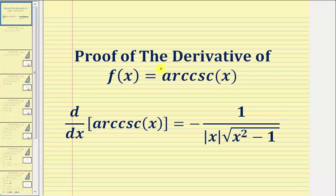Welcome to a proof of the derivative of f of x equals arc cosecant x. We'll prove the derivative of arc cosecant x with respect to x equals negative one divided by the absolute value of x times the square root of the quantity x squared minus one.